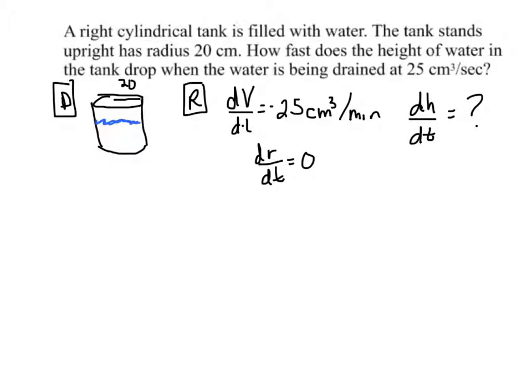So, what that can do for us is kind of nice. Our original equation, of course, is volume equals pi r squared h. But we can rewrite this as pi multiplied by 20 squared h because the radius isn't changing.